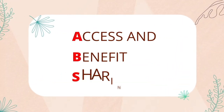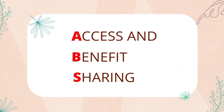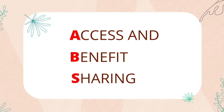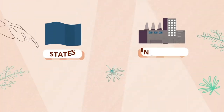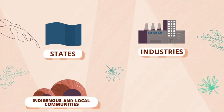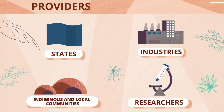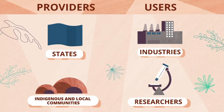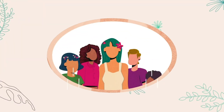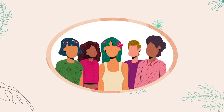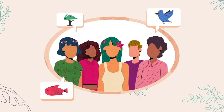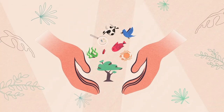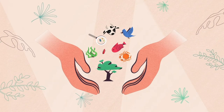ABS rules aim to ensure a balanced and transparent relationship between providers and users of biodiversity. They concern not only genetic resources, but also the traditional knowledge associated with them, and they recognize the contribution of local populations to the management and knowledge of biodiversity.